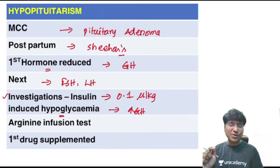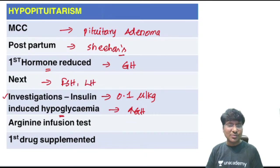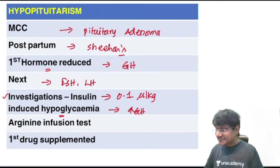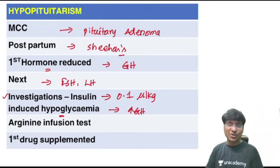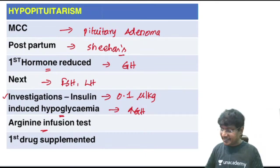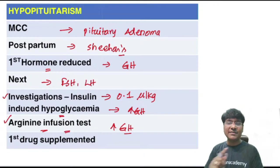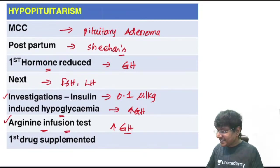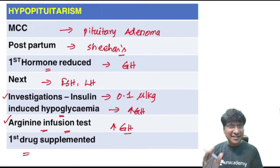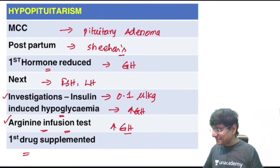With insulin-induced hypoglycemia (0.1 microgram/kg regular insulin), growth hormone should rise to more than 10 mg/dL. In hypopituitarism it fails to rise. The alternative test is arginine infusion. If growth hormone still doesn't increase with arginine, it suggests hypopituitarism. The first drug to supplement in hypopituitarism is steroids.